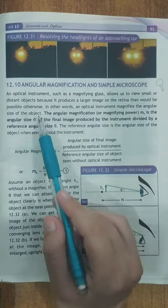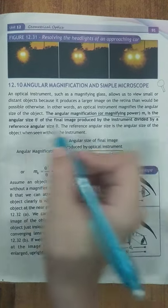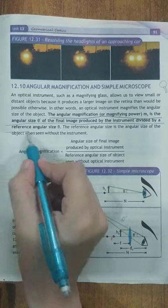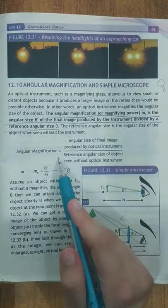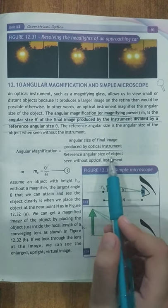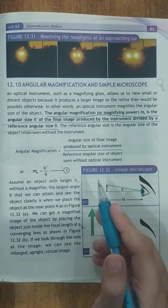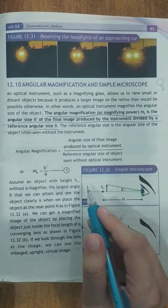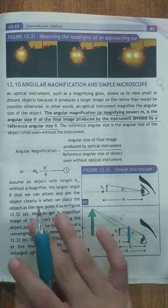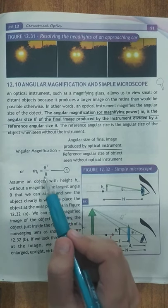In other words, an optical instrument magnifies the angular size of the object. The angular magnification or magnifying power m_theta is the angular size theta-bar of the final image produced by the instrument, divided by the reference angular size theta. Yeh angular size of the final image produced by the optical instrument divided by reference angular size of the object seen without optical instrument hai — yeh do angular sizes ka ratio hai. M_theta equals theta-bar divided by theta.